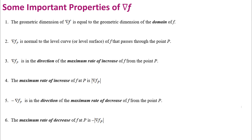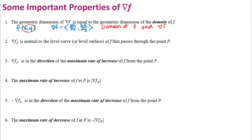The geometric dimension of the gradient vector of f is equal to the geometric dimension of the domain of f. So if you think about a function of two variables, f(x, y), provided that's a differentiable function, the gradient of f is going to be a vector with two components: the partial derivative with respect to x and the partial derivative with respect to y. The domain of the function would be some subset of R², and our gradient vector also has two components, so it's also in R². Both the domain and the gradient vector are in R².